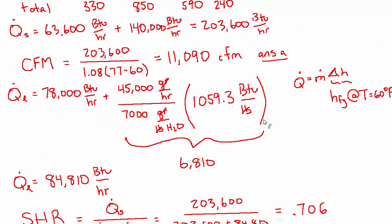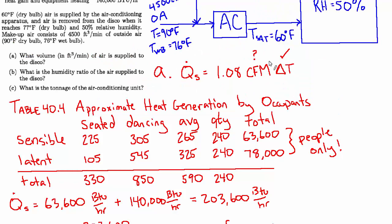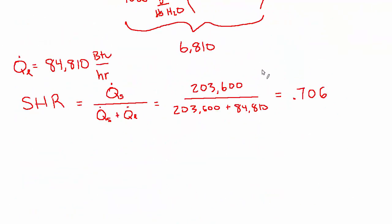But getting back to their question, which is what is the humidity ratio of the air supplied. So now we want to use this formula: the mass of water vapor that needs to be removed is equal to the mass of air that's being supplied times the difference in the humidity ratio. So in this case that's the humidity ratio in the room minus the humidity ratio of the supply air. So the humidity ratio in the room we can easily look up from the psych chart because we know the temperature and humidity in the room. We don't know the humidity ratio of the supply air—that's what we're looking to find out. We know the mass flow rate of air because we just calculated the volume flow rate in part A, so we can easily turn that into a mass flow rate just by using the density or the specific volume.